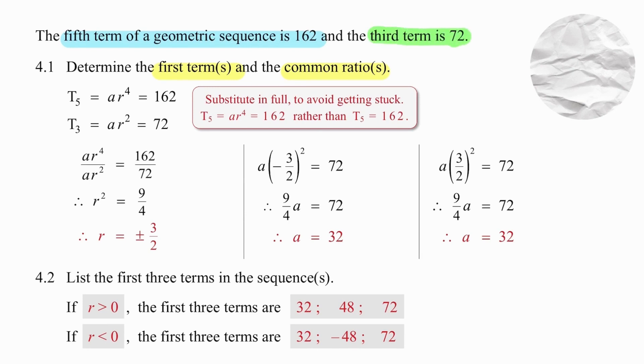It isn't very helpful if you just write T_5 equal to 162, make the effort not only to say that, but to use the link between the T_5 ar⁴ and 162. So what we're going to do here is say that our fifth term is ar⁴ which is 162 and our third term is ar² which is 72. With terms in a geometric sequence, it's extremely helpful to remember that if you divide you will find that a cancels.